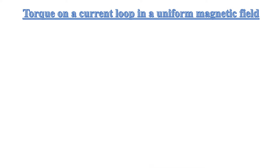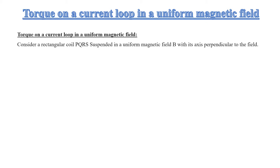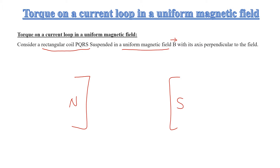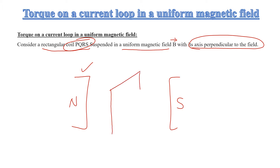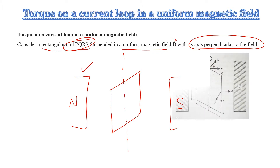Let's start the main topic: torque on a current loop in a uniform magnetic field. Consider a rectangular coil PQRS suspended in a uniform magnetic field B vector. We have two poles — one north pole and one south pole — with the coil's axis perpendicular to the field. The coil and magnet are kept perpendicular to each other, and this dotted line represents the axis of rotation.